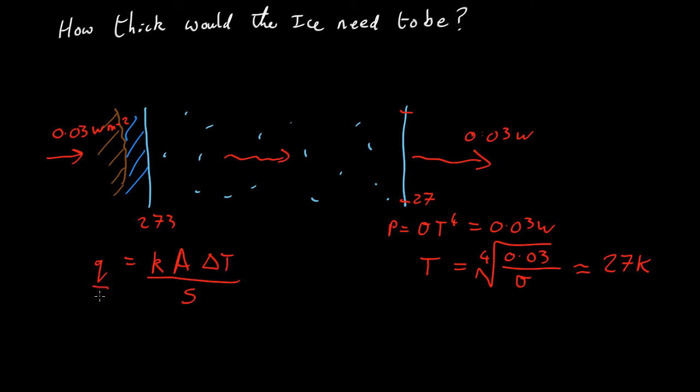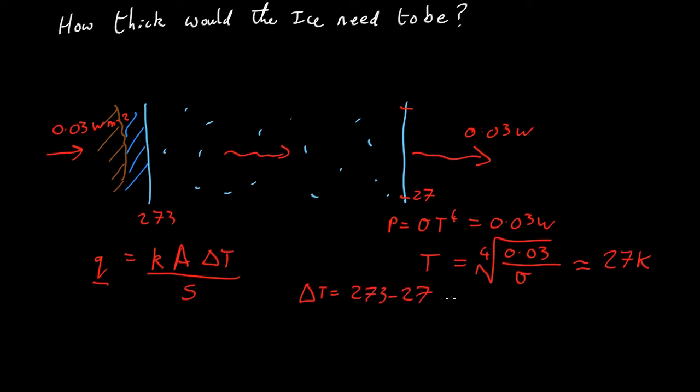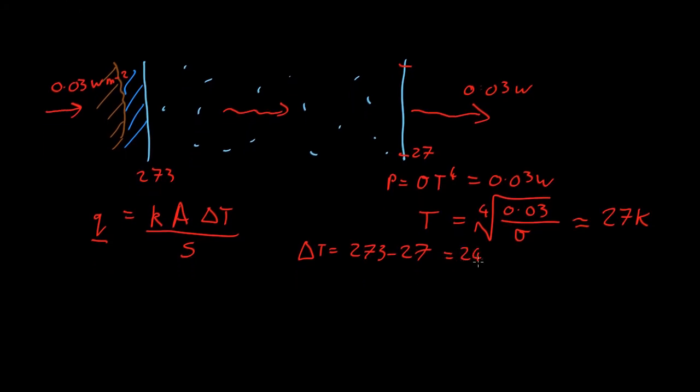Now we know Q, 0.03. We want to find how thick it has to be. We know the temperature difference we want. So we know delta T equals 273 minus 27, which is 246 Kelvin. Area is 1.